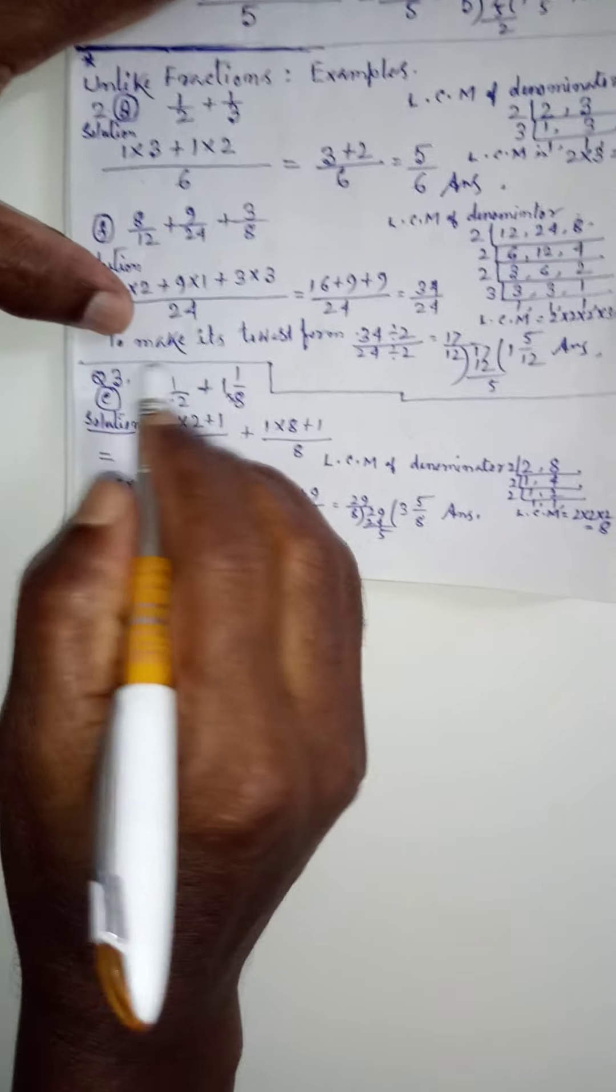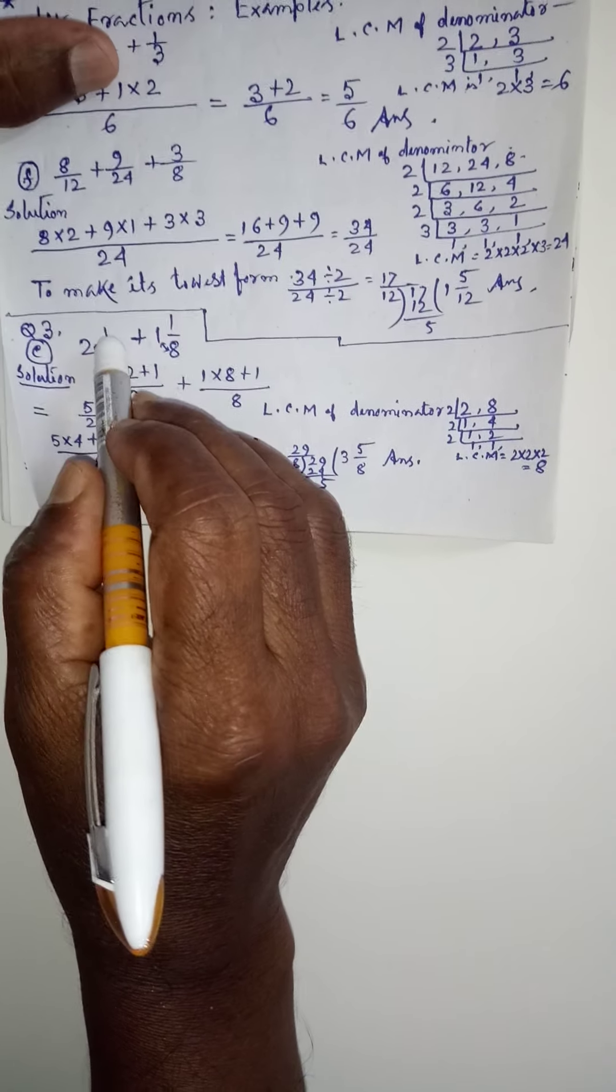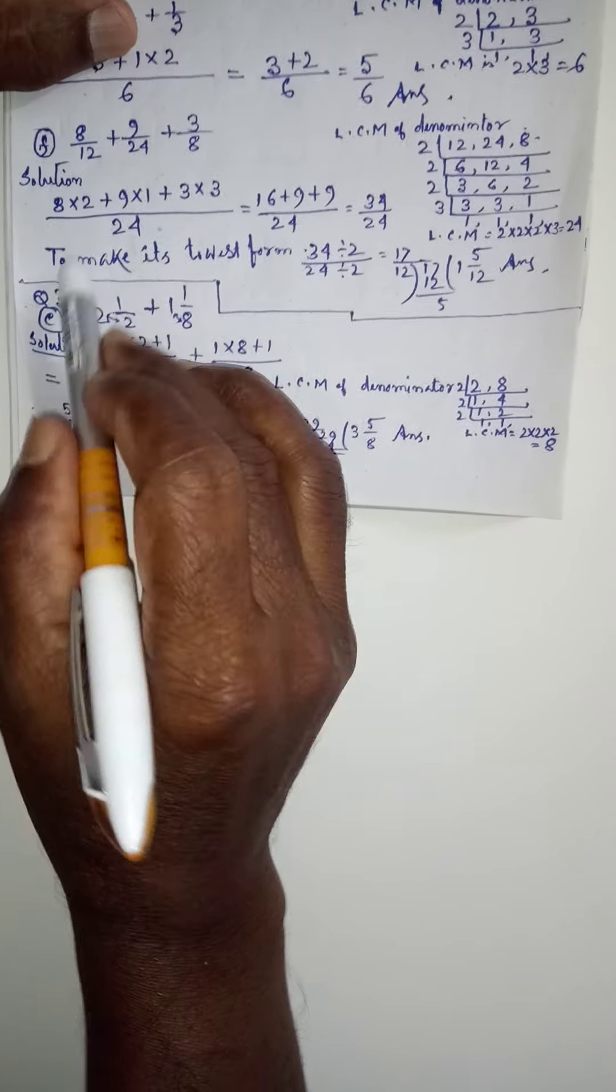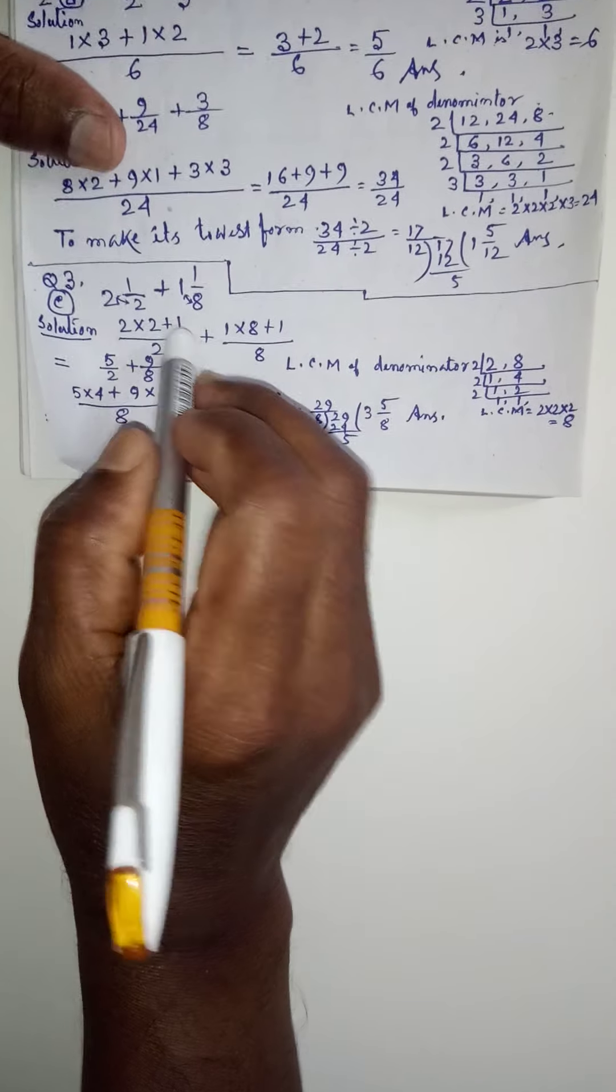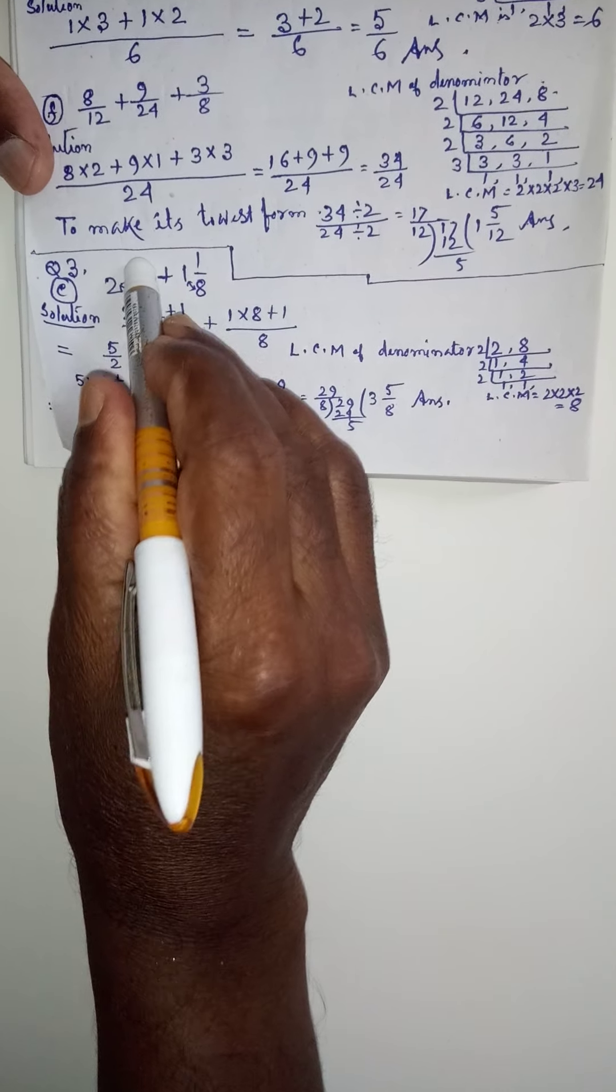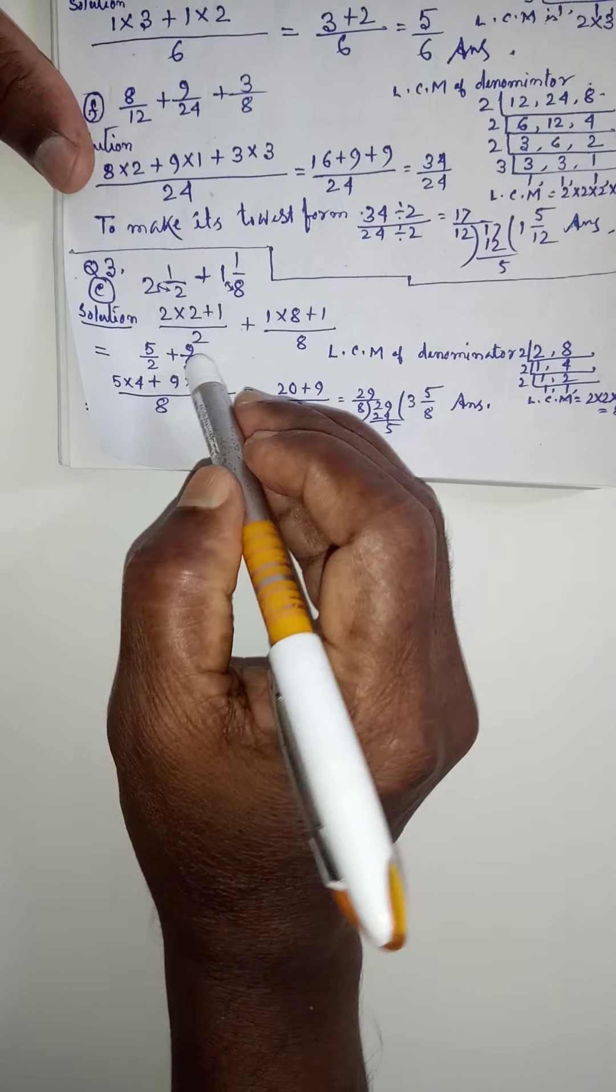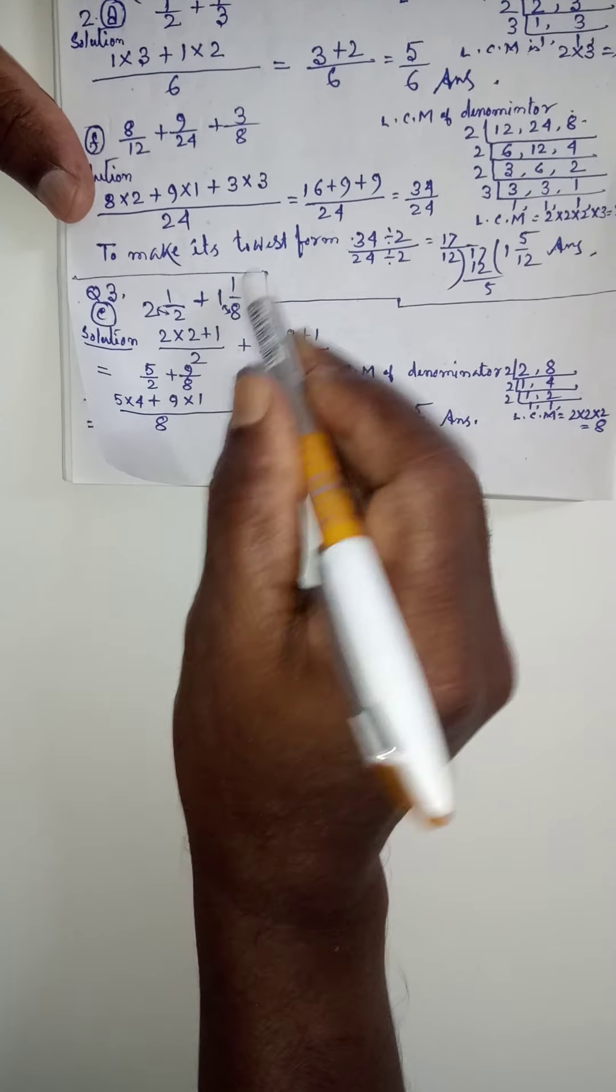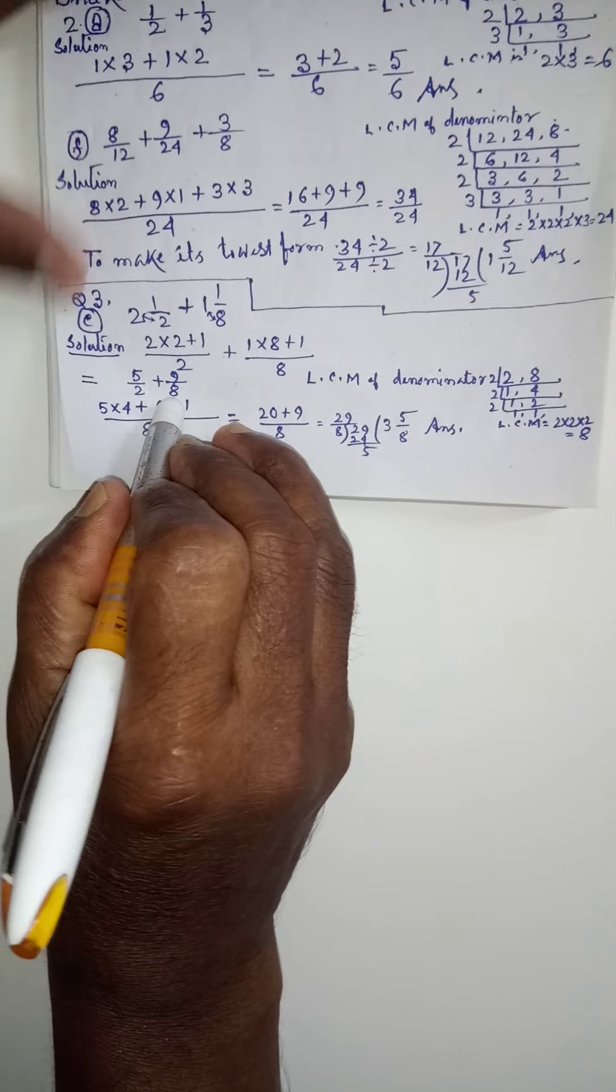Here, in the third example, we have seen, 1 is a whole number and with the fraction is also there. So, first of all, this mixed fraction, we have to, how it is to be made? It is to be made unlike fraction. See, here, 2 to ja 4 plus 1. 2 into 2 plus 1. 2 into 2 plus 1 means 5 by 2. Here, 1 into 8. 1 into 8 plus 1 plus 1 means 9 by 8.